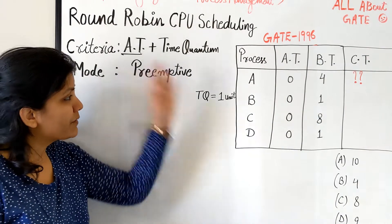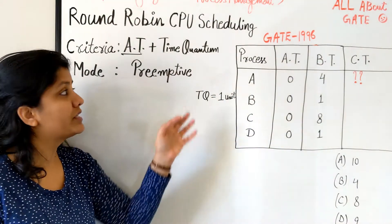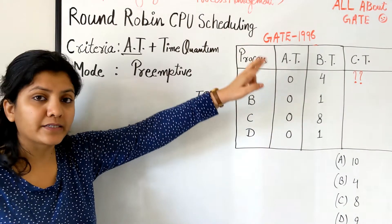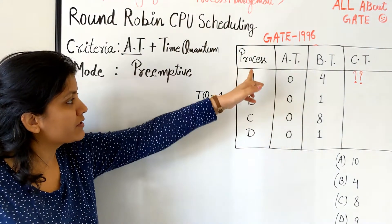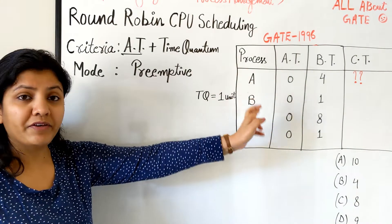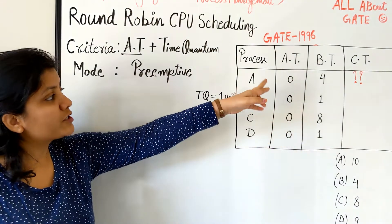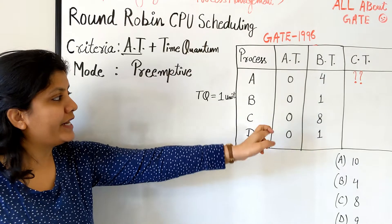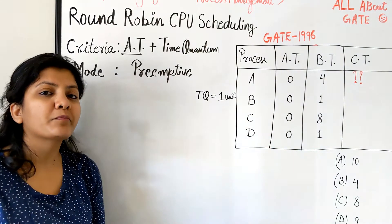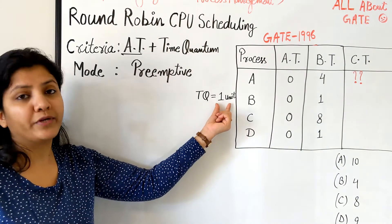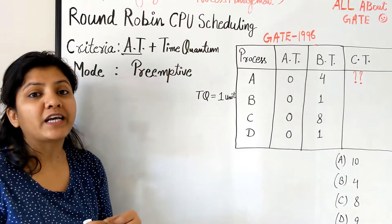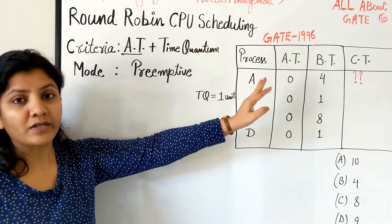So let me explain you this algorithm with the help of this question which was asked in GATE 1996. What the question says is that we have four processes A, B, C, D, all arriving at time 0 and their respective burst times are 4, 1, 8, 1. Now the question simply says that we make use of the round robin scheduling algorithm where the time quantum given is one unit. What is the completion time of process A? That is what the question is asking.